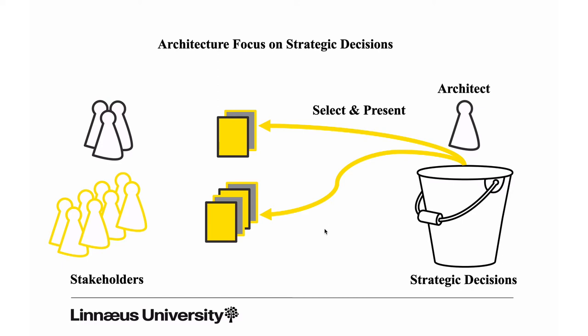This is the essence of software architecture presented in one picture. We have a number of strategic decisions that the architect or architects make — we fill a bucket with all the decisions — and the challenge is to find the best ways to present these to the stakeholders who have concerns with respect to the system. We have to select the right decisions, but also present them in a way that comes up with a tailored presentation for each group of stakeholders.